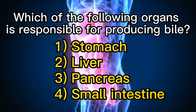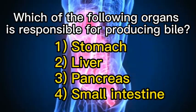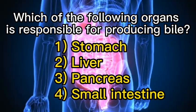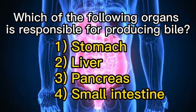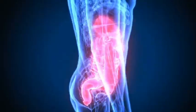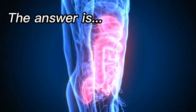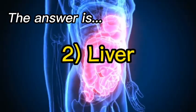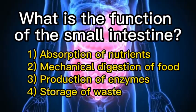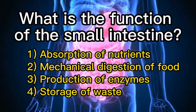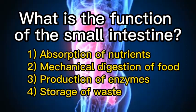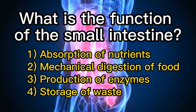Which of the following organs is responsible for producing bile? One: stomach. Two: liver. Three: pancreas. Four: small intestine. The answer is two, liver.